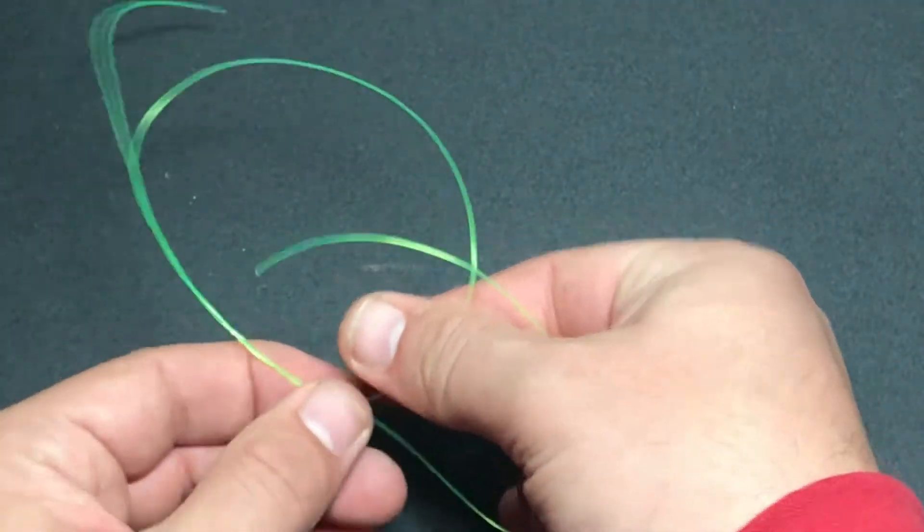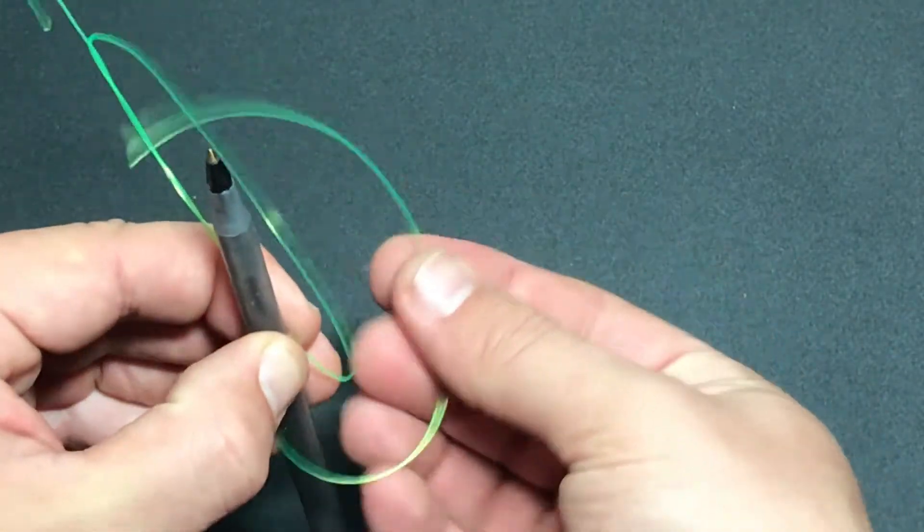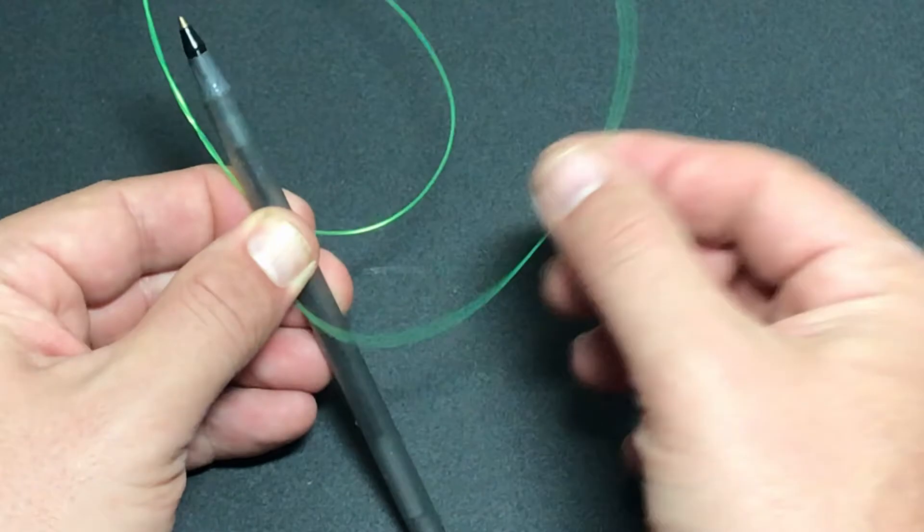Now that I've done that, I'm going to take a pin, I'm going to slide it between that loop and the tag end like this.